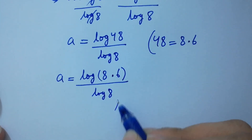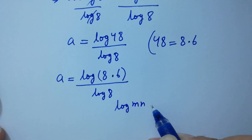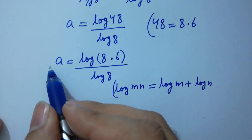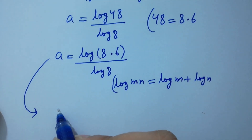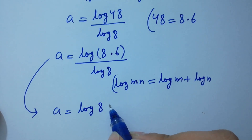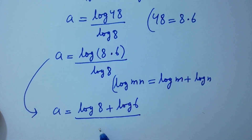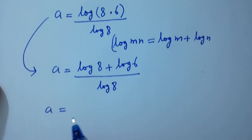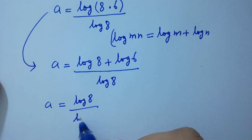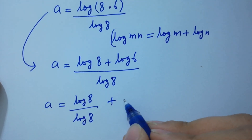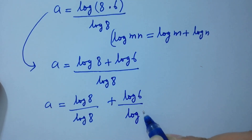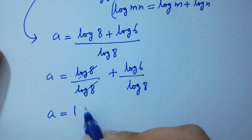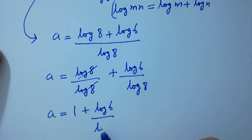As log(mn) equals log m plus log n, a will be equal to (log 8 plus log 6) over log 8. This gives a equals log 8 over log 8 plus log 6 over log 8. Log 8 and log 8 cancel, so a equals 1 plus log 6 over log 8.